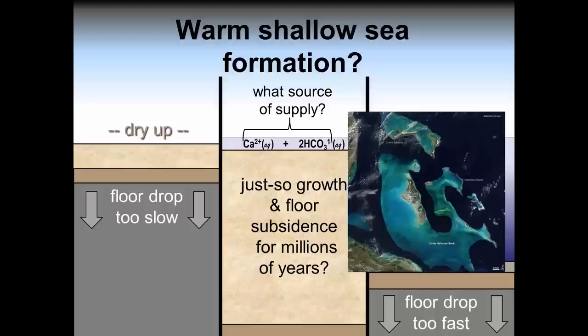Remember, the Bahamas Bank is up to six miles thick in places. What mechanism dropped the seafloor at such even rates to build up miles-thick layers of organic limestone deposit? What was the continuous source of dissolved minerals to support limestone growth while not choking out other sea life? Few consider much less attempt to answer these difficult yet important questions if the warm-shallow sea concept is to be believed.